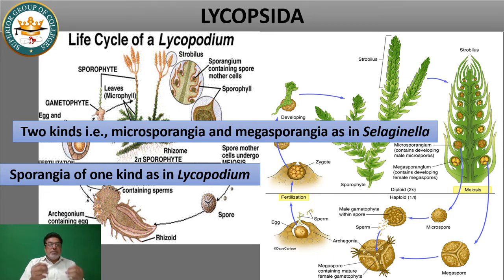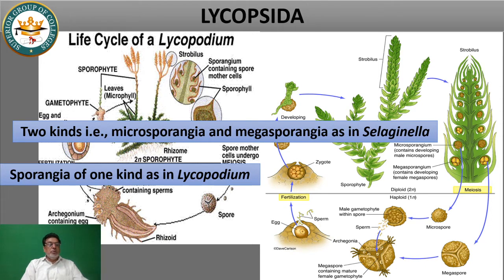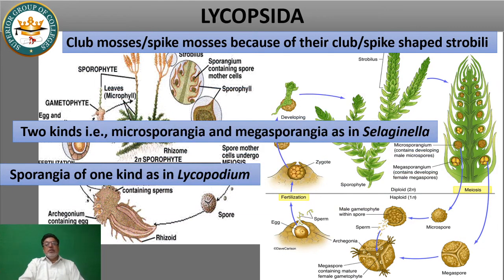Heterospory is an important characteristic of seed plants. Those spermatophytes and seed-producing plants produce both microsporangia and megasporangia. This phenomenon is present in seed plants and is an important feature of seed plants. Members of Lycopsida are commonly called club mosses or spike mosses. If you look at the strobilus, it is either spike-shaped or club-shaped — broad at one end and narrow at the other.